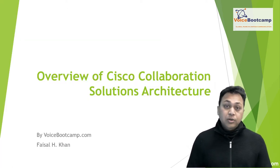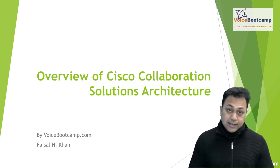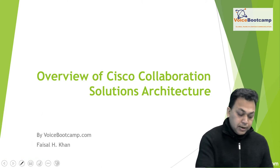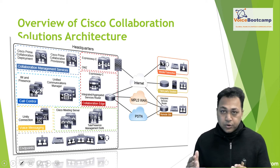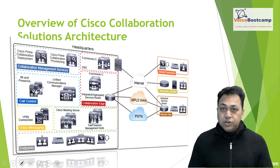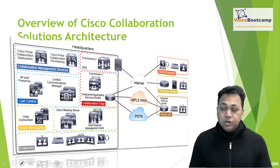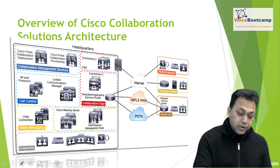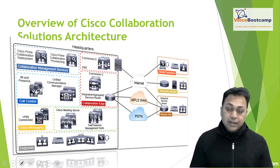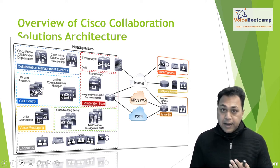We're going to start with our overview of the Cisco Collaboration solution architecture. We're going to look at the various applications in different categories. The foundation where all the components are deployed — you need to understand what each component does. The components are categorized into different categories such as call control, messaging, conferencing, edge, and of course the endpoints.